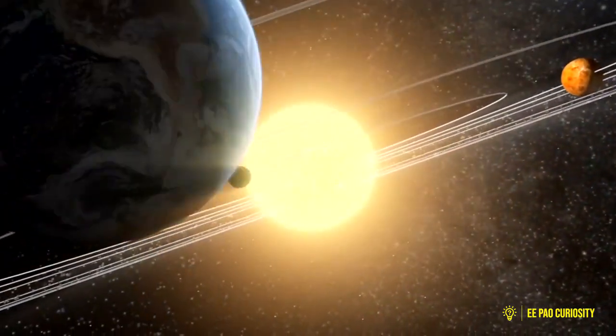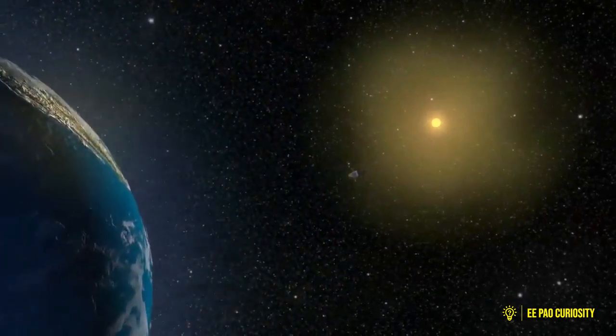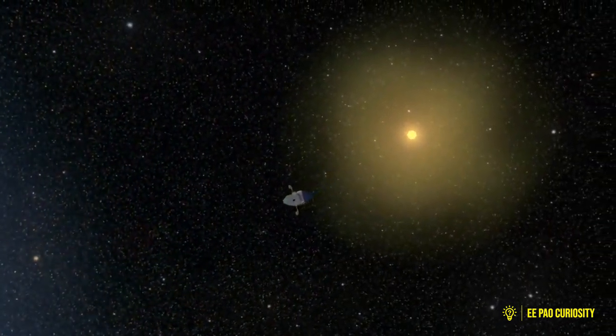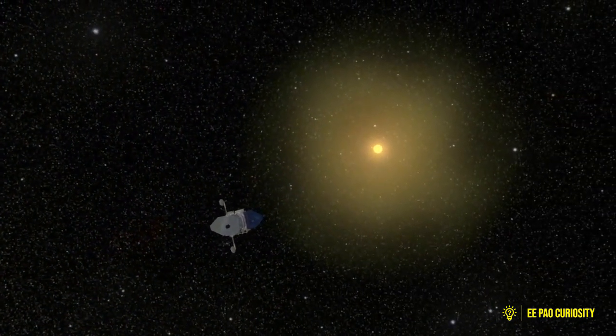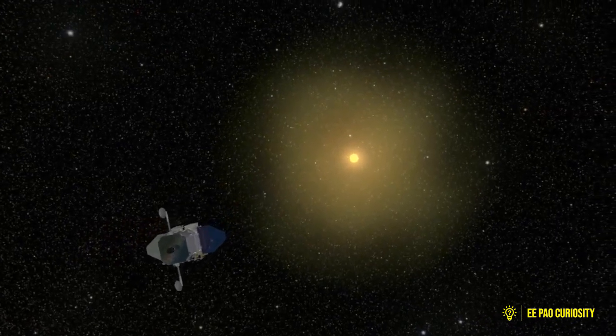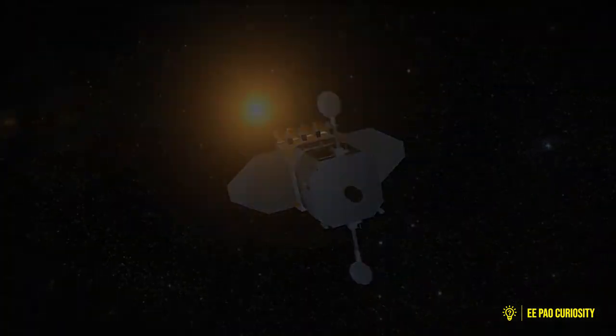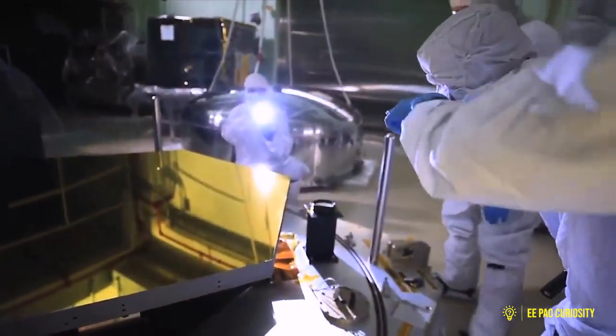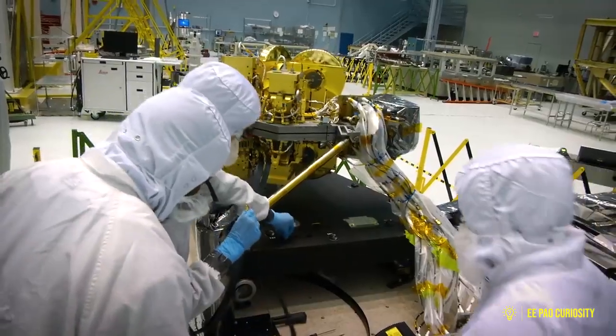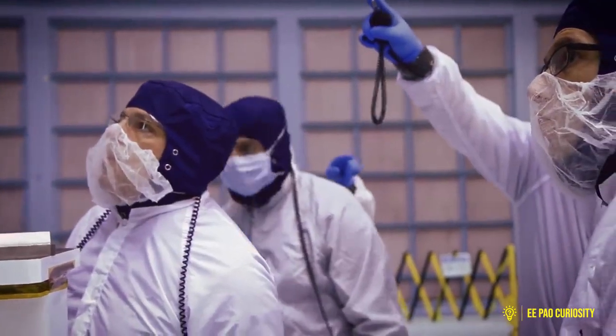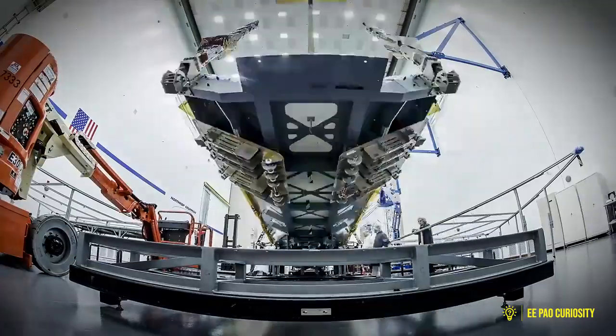A satellite placed in a halo orbit around the Lagrange point L1 of the Sun-Earth system has the great advantage of continuously viewing the Sun without hindrances from any eclipse. As of July 2019, the mission has an allocated cost of 378.53 crore rupees, excluding the launch cost.